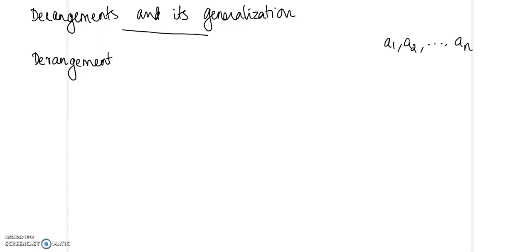Hello all. In today's class we will look into the next application of the Generalized Principle of Inclusion and Exclusion. That is used in the concept of derangements and how to find the number of different derangements. We will define what a derangement is, look at its generalization, and find an expression for the number of derangements using the Generalized Principle of Inclusion and Exclusion.